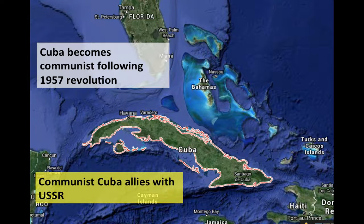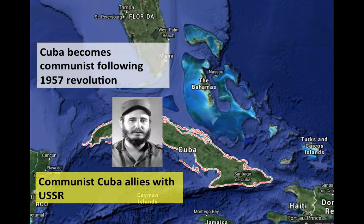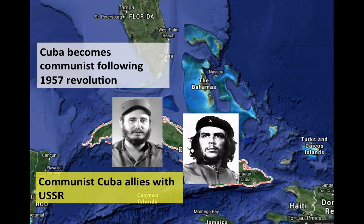How did the US respond to this challenge? There were a couple of different options, but let's look back at the history of Cuba first. Cuba became communist in 1957 during a revolution led by Fidel Castro and Che Guevara, who you know from all those t-shirts. The Soviet Union had itself become communist in 1917 after it overthrew the Tsars, so it really respected Cuba's stance as a communist state, and especially viewed Cuba as an important ally given its proximity to Florida.